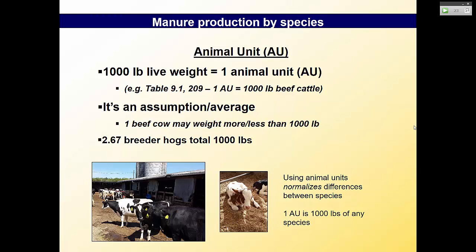One animal unit — AU — is simply 1,000 pounds of live-weight animal. Because every species weighs a different amount, we normalize or standardize to animal units so we can discuss manure production across different animal types. We have to make assumptions — you're not going to go out and weigh every single animal, and it changes over time. So one beef cow is assumed to weigh 1,000 pounds, while it takes 2.67 breeder hogs to make 1,000 pounds.